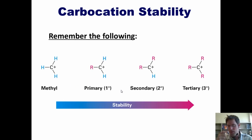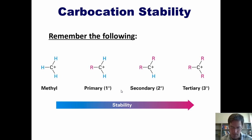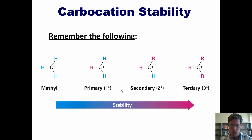You should remember that tertiary carbocations are more stable than secondary carbocations, which are more stable than primary carbocations, which are more stable than methyl carbocations. Primary and methyl carbocations are so unstable that an old professor of mine once said they probably only exist transiently under extreme conditions in interstellar space.